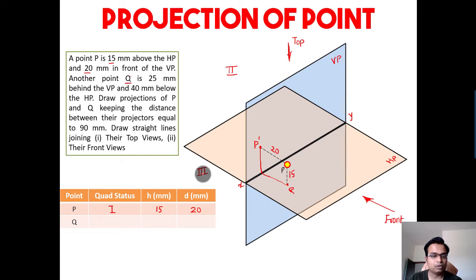Let's read this: 40 mm below the HP. So clearly stating that point Q is lying in the third quadrant since it is below the horizontal plane. Below and behind is the definition of a point situated in the third quadrant.